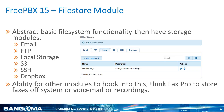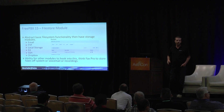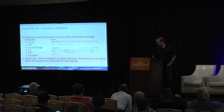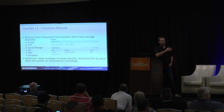The other thing we introduced is the file store module — another open source module that links directly into backup and restore, but we want to bring it into other functionality in FreePBX as well. For backup and restore it allows you to back up to Dropbox, which is new, as well as SSH, S3, local storage, FTP, and email. In the future, modules like Fax Pro or any module that can save to disk would also plug into the file store.